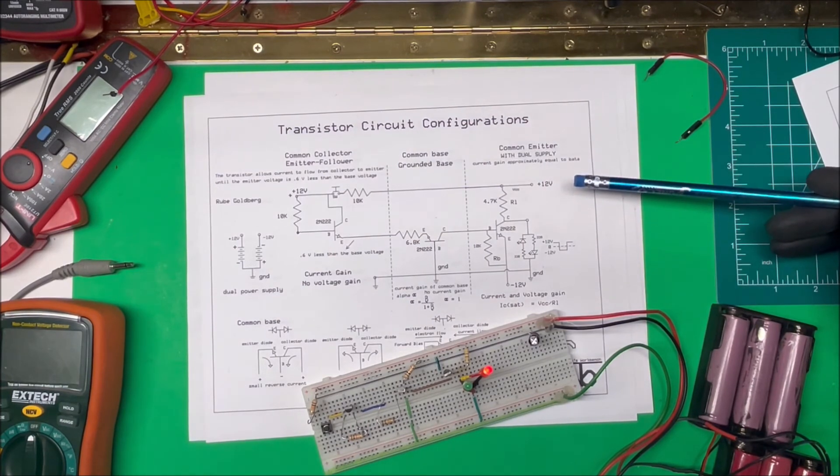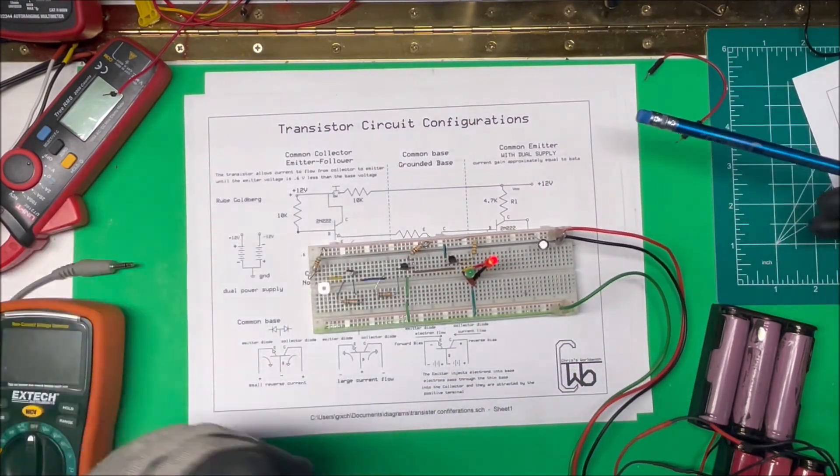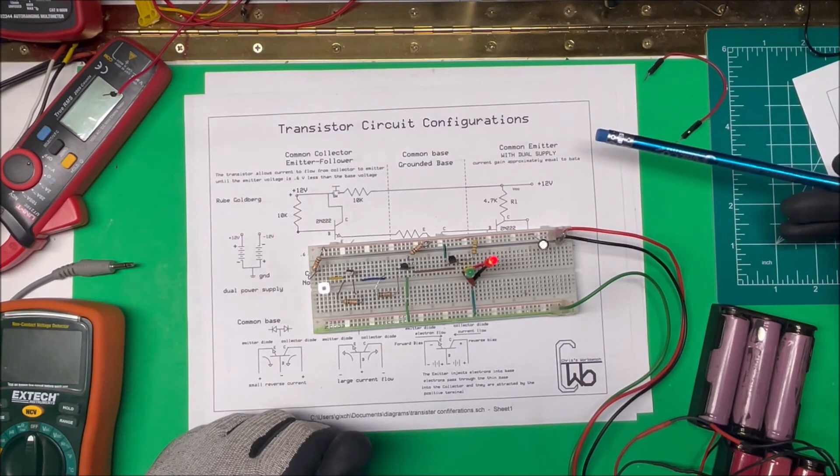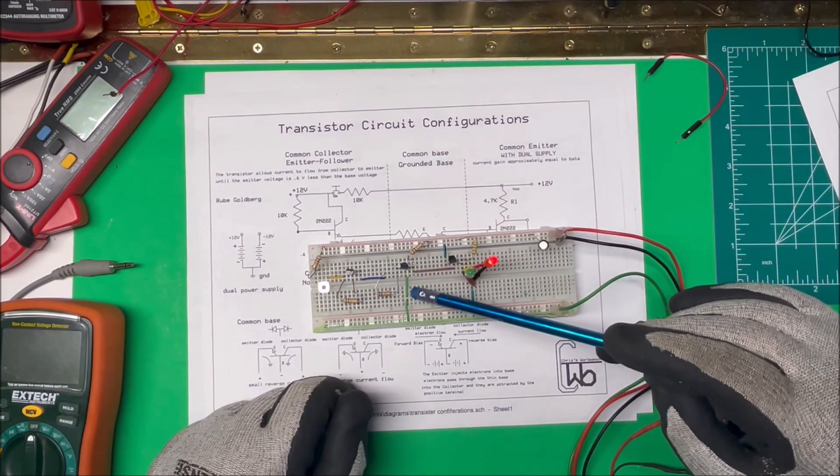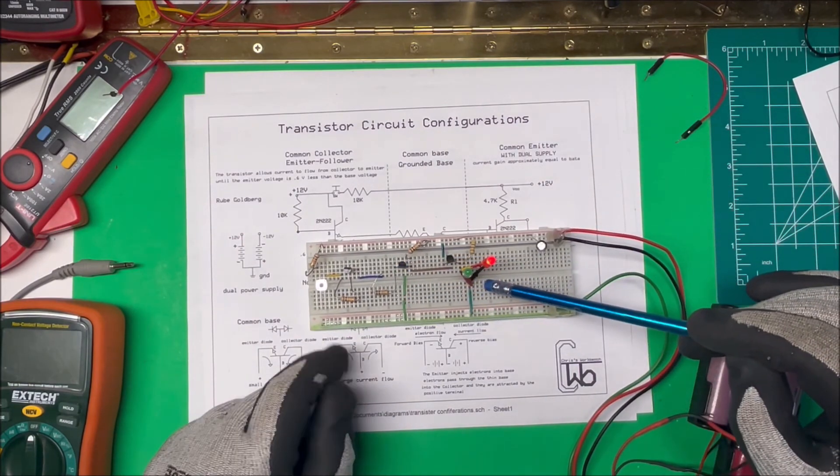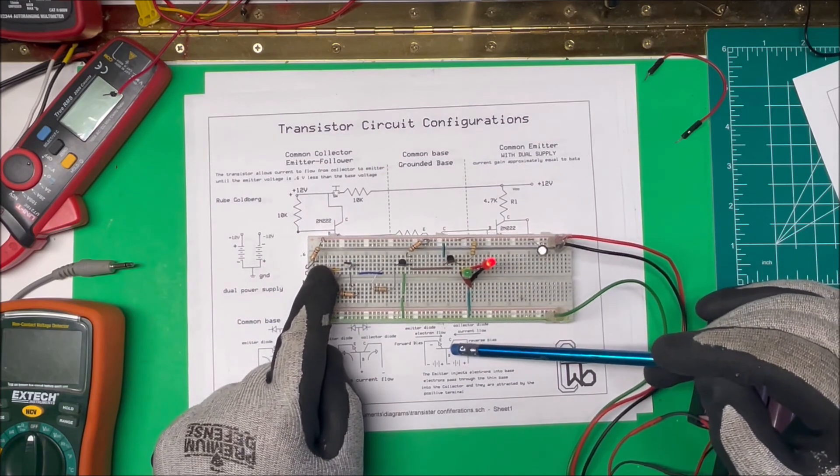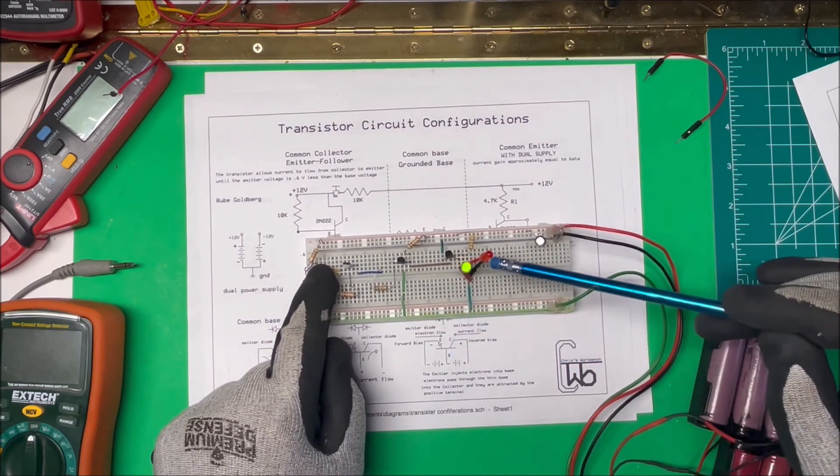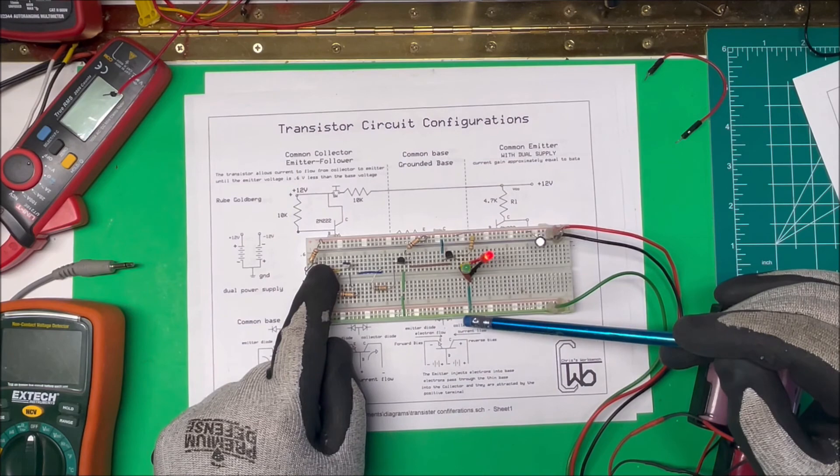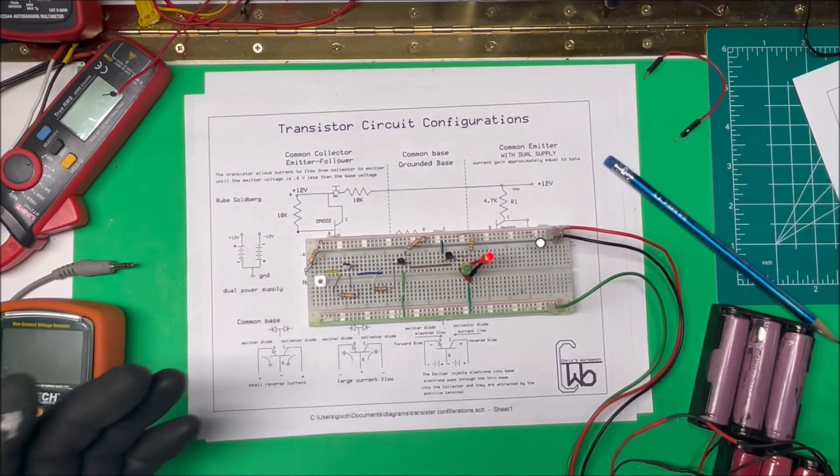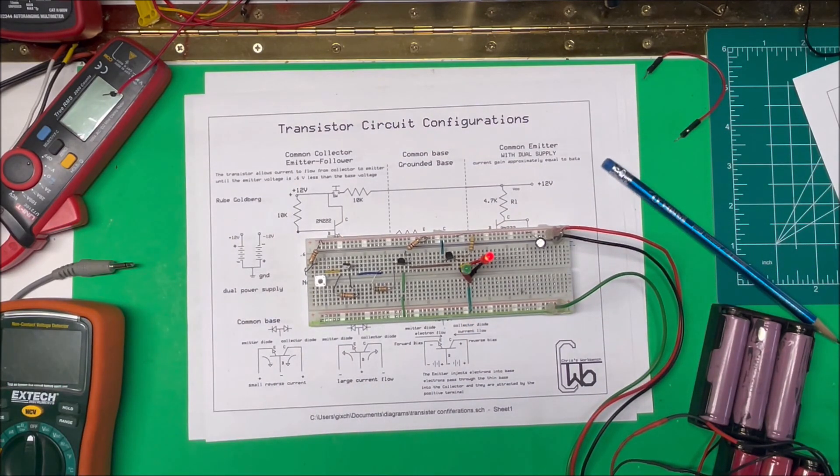So that's the common collector, and this one's a common base, and then a common emitter here. And I can get plus 12 and minus 12 volts on there. So that's it. Thank you.